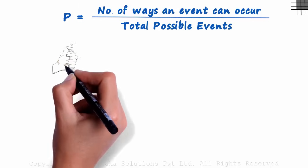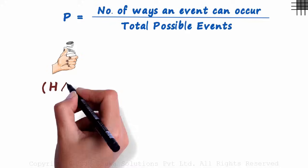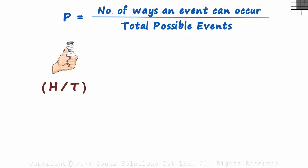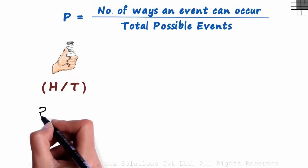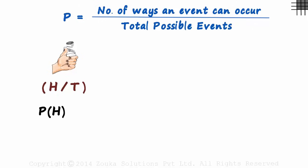First, the toss of a fair coin. It can either land a head or a tail. If we toss a fair coin, what is the probability that it will land a head? There is only one way to get a head. And the total possible outcomes are head or tail — two total events. So the probability of getting a head at the toss of one fair coin is one over two, or fifty percent.